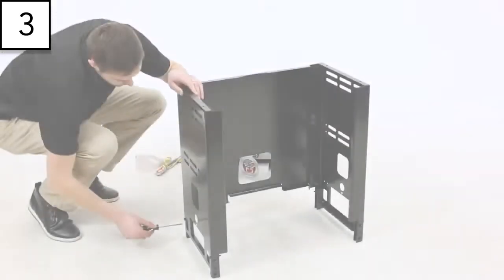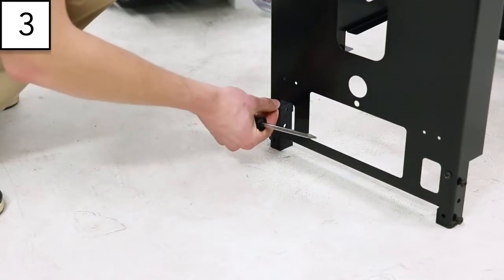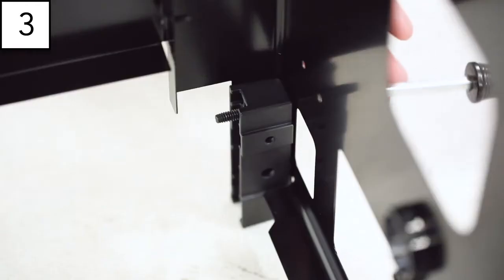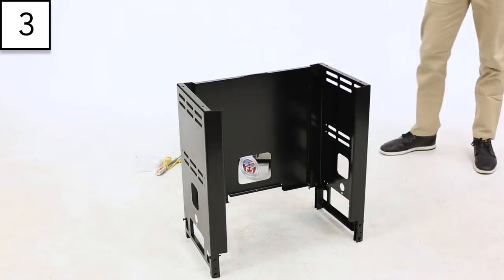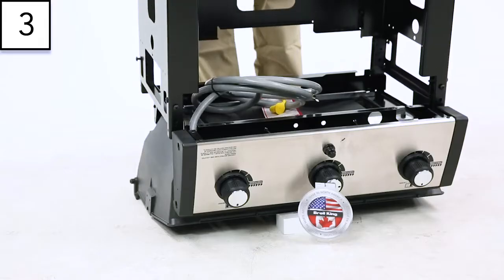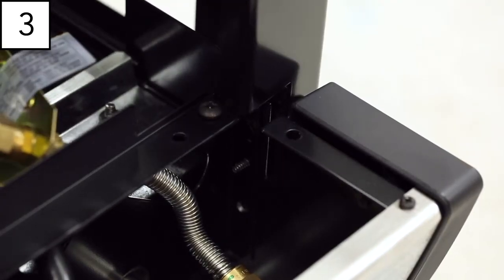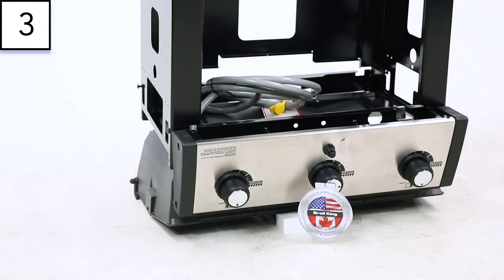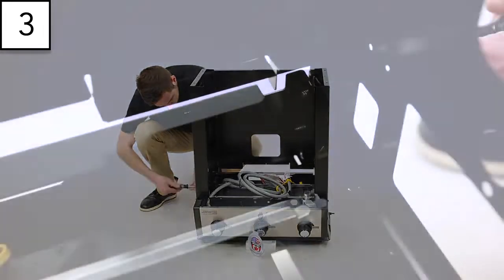Step 3. Attach the cabinet assembly to the cook box. Loosen the screw in the top back corner on either side panel. Insert the top of the cabinet assembly into the bottom of the cook box, making sure the two screws on the front corner of the side panels fit into the grooves on the cook box. Once in place, tighten the two screws previously loosened in the step.